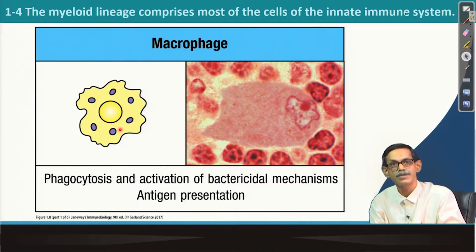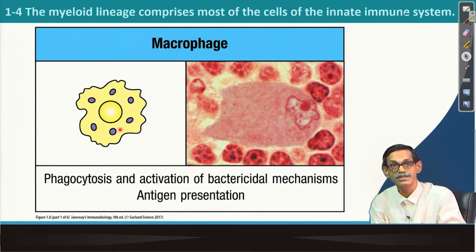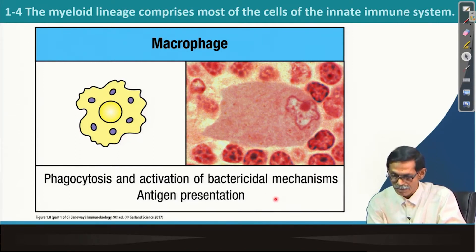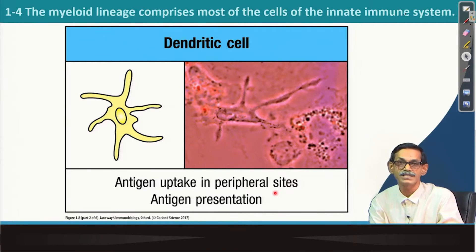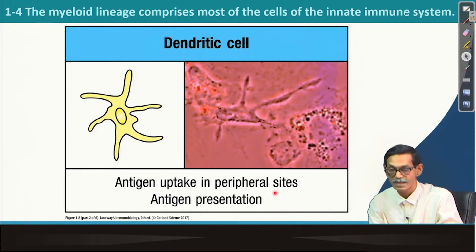I will come back to what antigen presentation is — it is very, very important. Antigen presentation is one of the major roles, alongside phagocytosis. Macrophage also does the cleaning up of debris, as we already discussed in the last class. Similarly, there is another antigen-presenting cell known as the dendritic cell. It takes up antigen from peripheral sites, normally by macropinocytosis, and presents the antigen to B cells and T cells in the lymph node.